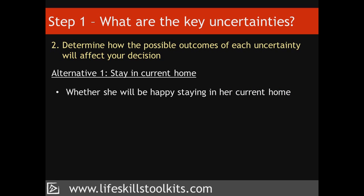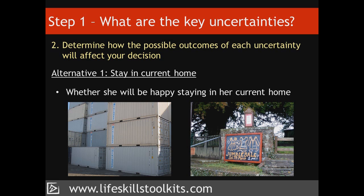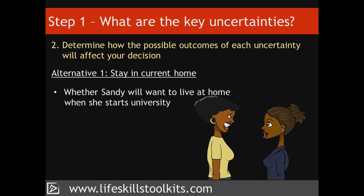The second thing Franny needs to do is determine how the possible outcomes of each uncertainty would affect her decision. Regarding her first uncertainty about being happy, Franny feels that storing or giving away objects that would cause pain would reduce the likelihood of being unhappy, so she no longer needs to consider this uncertainty. Franny asks Sandy about her plans and, with the university only a bus ride away and Sandy happy living at home, Sandy confirms she has no plans to move out – so Franny can remove this uncertainty too.